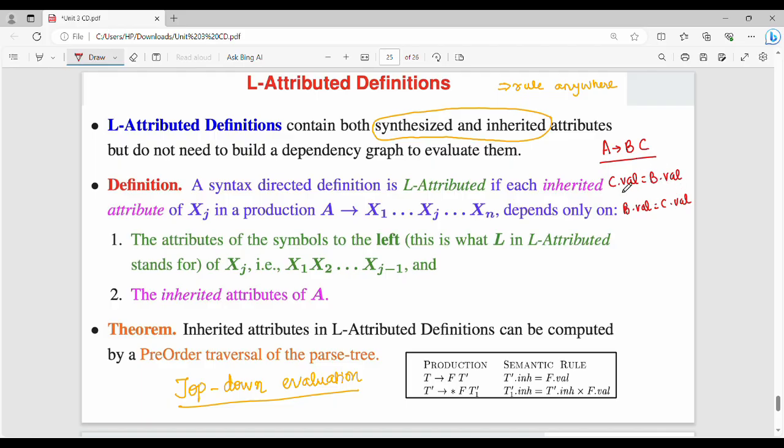In L-attributed definitions, consider siblings in production rules. If C and B are siblings and B is the left sibling of C, then this is L-attributed. If B.val equals C.val, where B's attribute value comes from its right sibling C, this is an L-attributed definition.